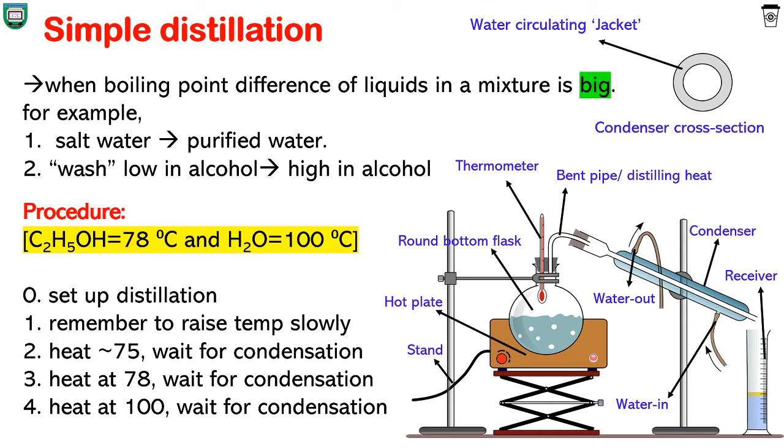Close the RB flask's mouth with a wooden cork that has two holes in it. In the first hole, insert thermometer as shown to monitor and control the temperature while heating. In another hole, put a bent glass pipe or distilling head which will be then connected to a condenser.